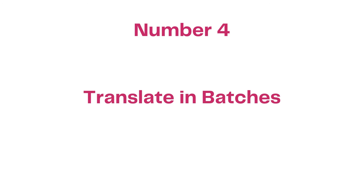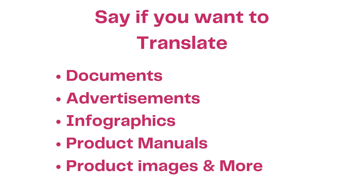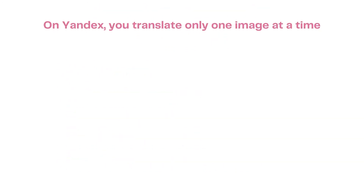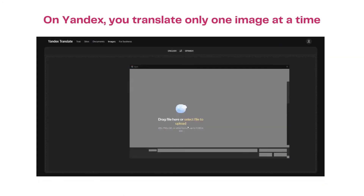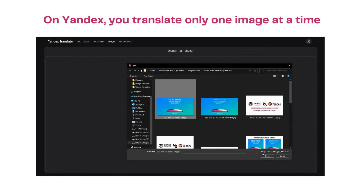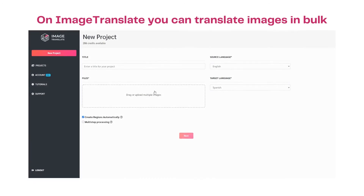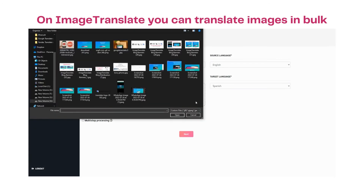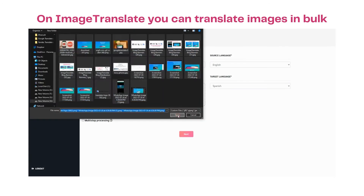Translate in Batches: When you are dealing with a lot of images, it becomes critical to translate images in bulk. Whether you want to translate documents, advertisements, infographics, product manuals, product images, or much more — in bulk and in different languages in one click — this feature comes in real handy. On Yandex Translate you can only translate one image at a time, but on Image Translate you can translate multiple images in bulk in 40-plus different languages.